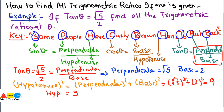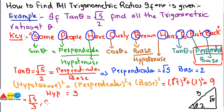Now we have all three sides of the right angle triangle: hypotenuse is 3, perpendicular is root 5, and base is 2, with angle theta. Using the mnemonic key: sin theta equals perpendicular over hypotenuse, so sin theta equals root 5 over 3. Cos theta equals base over hypotenuse, so cos theta equals 2 over 3. Tan theta equals perpendicular over base, so tan theta equals root 5 over 2.